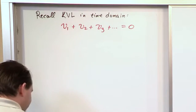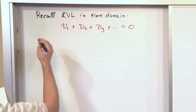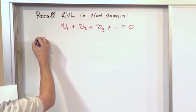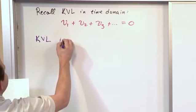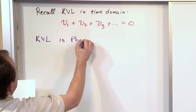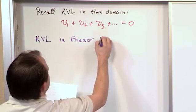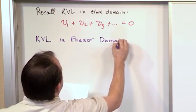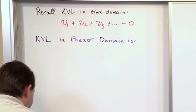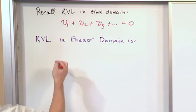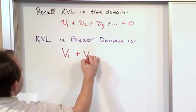So now let's look at the following. This is the point of this lesson. KVL — Kirchhoff voltage law — in the phasor domain, which means AC analysis using phasors. I bet you can guess what it is: phasor voltage one plus phasor voltage two...